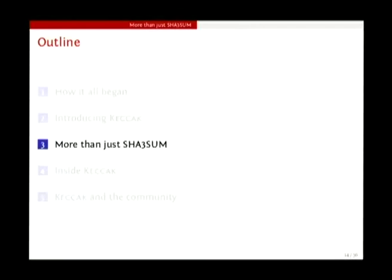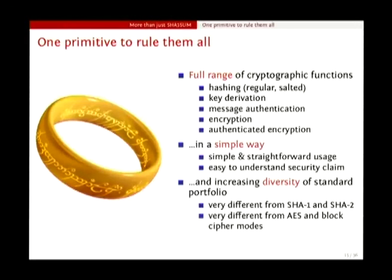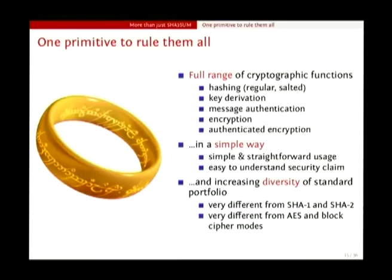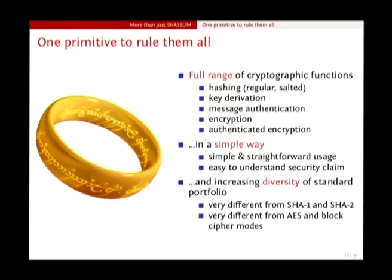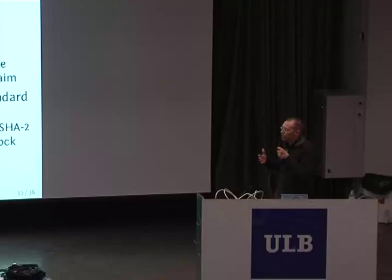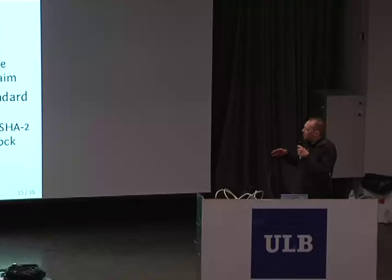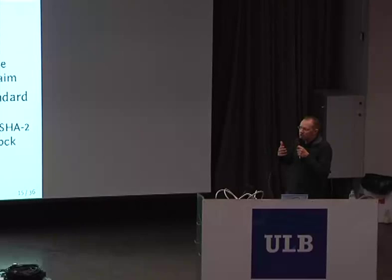Keccak was in the SHA-3 contest as a hash function, but it's in fact more than hashing — it's a sponge function. With this function, you can do all symmetric crypto operations that you need: hashing, key derivation, message authentication, encryption, and the combination of message authentication and encryption in one primitive. All these things can also be done by a block cipher, but in a block cipher it becomes reasonably complex to define all these modes. For Keccak's permutation, it's more simple and straightforward, and it gives you more flexibility because you can choose the rate and capacity.